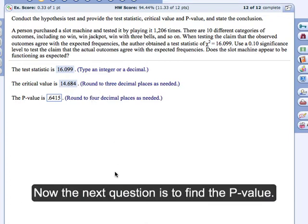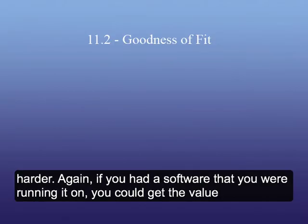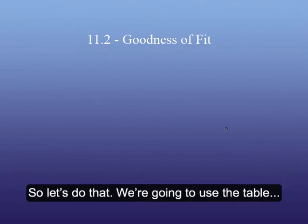Now the next question is to find the p-value, and then make a decision. So that's a little bit harder. Again, if you had a software that you were running it on, you could get the value. But using the table, we could just get an approximation. Okay, so let's do that. We're going to use the table.